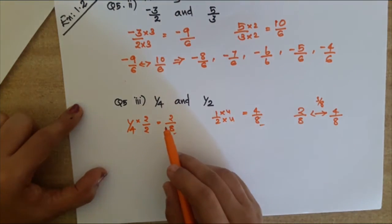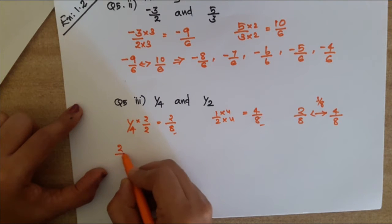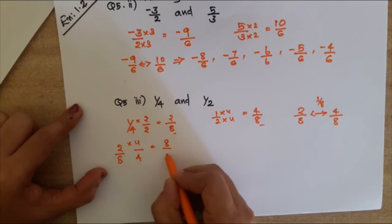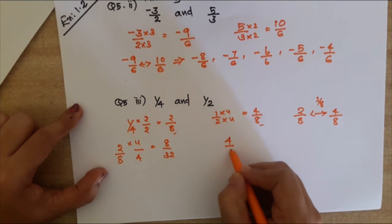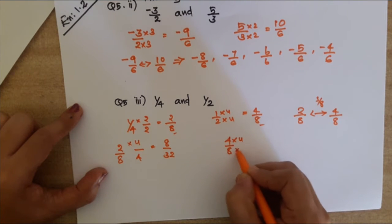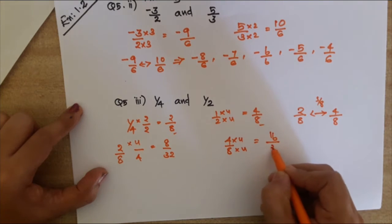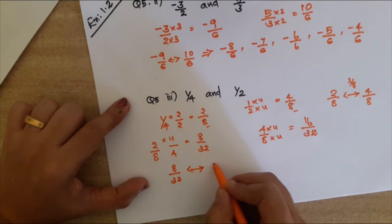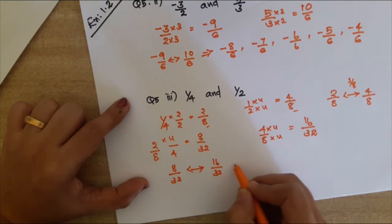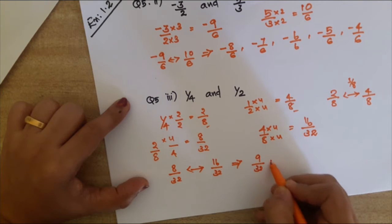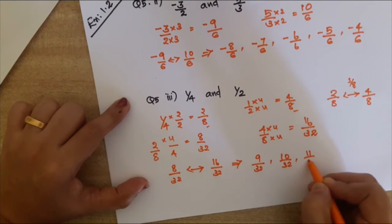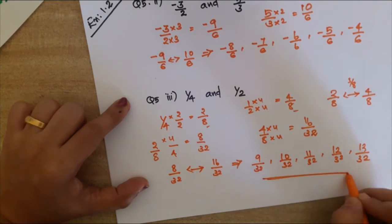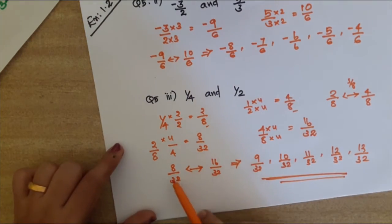Since we need five rational numbers, we multiply again by 4: 2/8 becomes 8/32 and 4/8 becomes 16/32. Now the five rational numbers between 8/32 and 16/32 are: 9/32, 10/32, 11/32, 12/32, and 13/32.